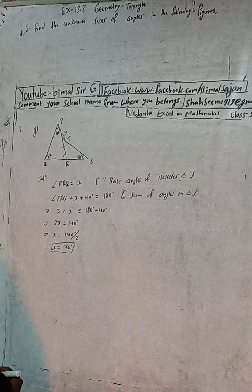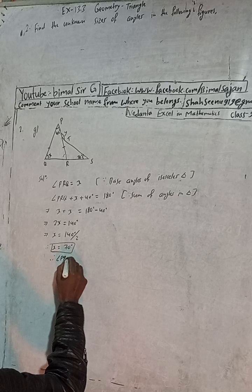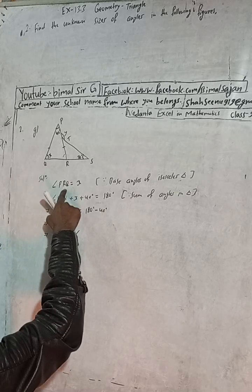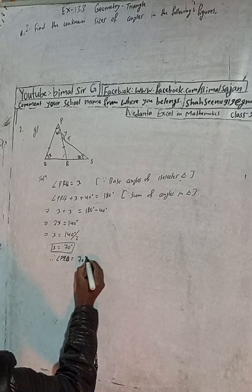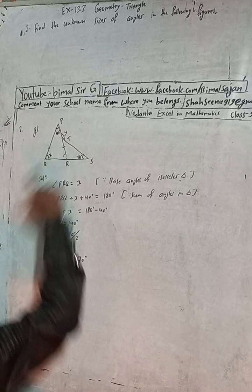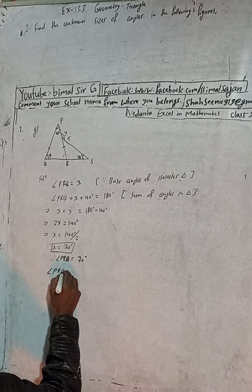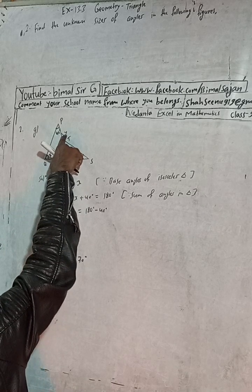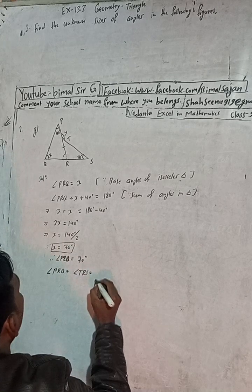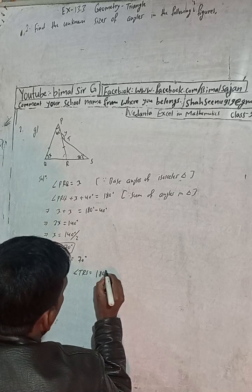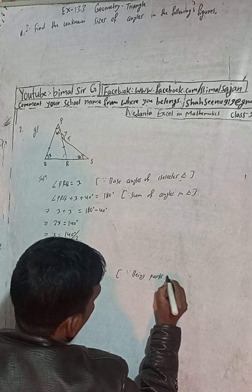Therefore, angle PRQ is also equal to 70 degrees. Now, angle PRQ plus angle TRS equals 180 degrees, because they are parts of a straight line.